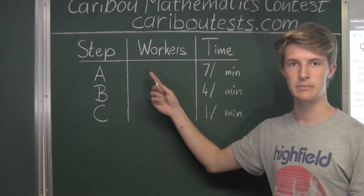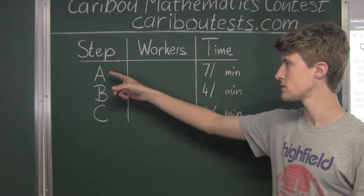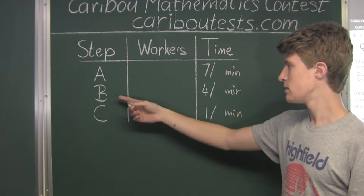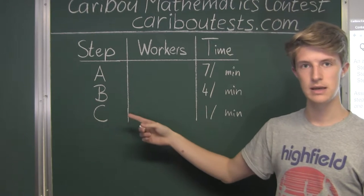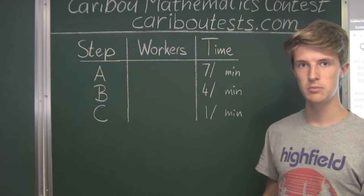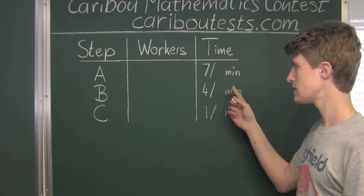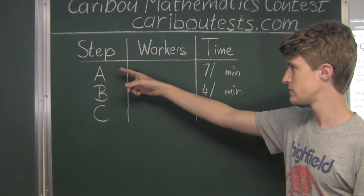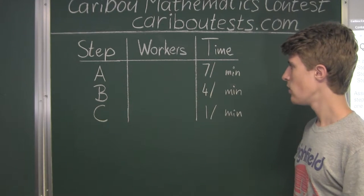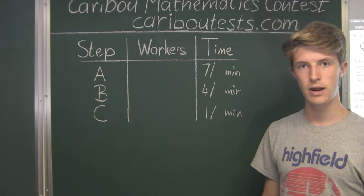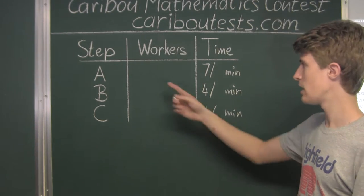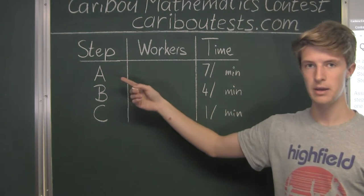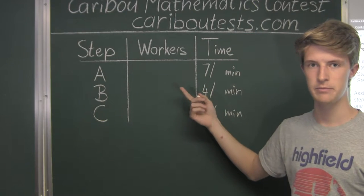Let's see what would happen if we were to have two workers for step A. We wouldn't want three workers for either step B or step C, as that would be more workers for a step that takes less time. So we would have two, two, and two — two workers for each of steps A, B, and C. The maximum amount of time for any one step would be the 7/2 minutes for step A, which is 3.5 minutes.